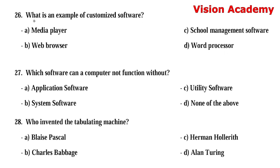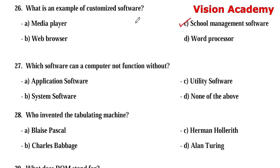Question number 26: What is an example of customized software? Option A: media player. Option B: web browser. Option C: school management software. Option D: word processor. Option C, school management software, is the right answer.